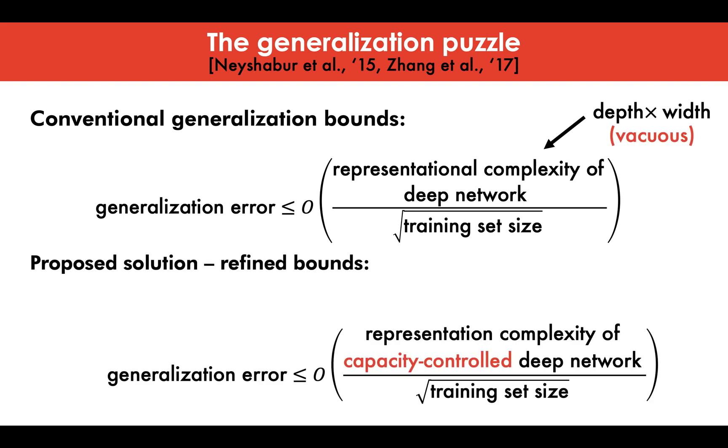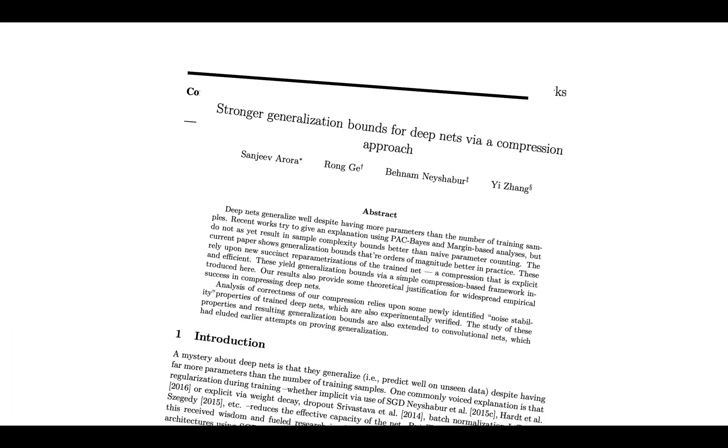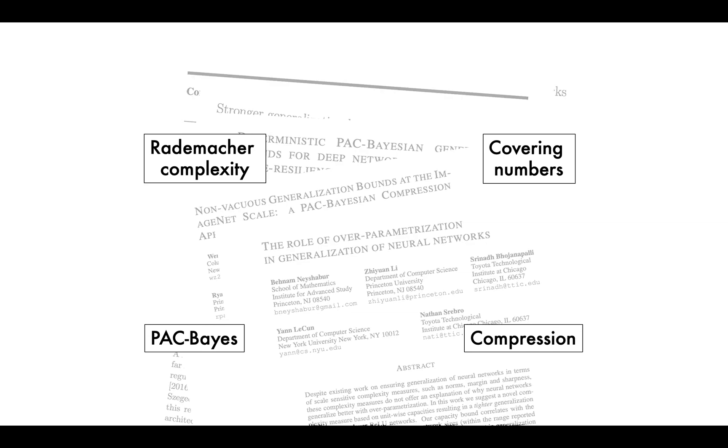To this end, these two papers proposed that we should derive more refined bounds by taking into account the fact that SGD implicitly controls the representational capacity of the network. And this suggestion resulted in an exciting line of work that found new ways of deriving generalization bounds in deep learning using many different learning theoretic tools.